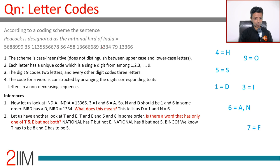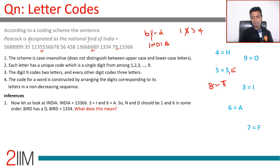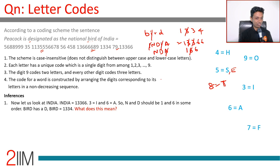T and E are confirmed: T is eight, E is five. Now looking at 'india': I, N, D, I, A coded as one, three, three, six, six. We know I is three and A is six, so N and D must be one and six.